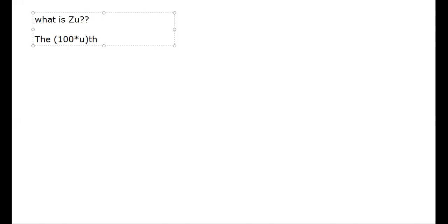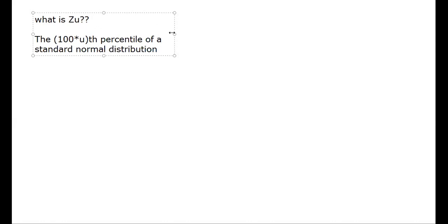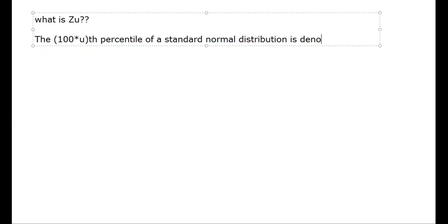What is Z_u in the case of a normal distribution? The 100·U-th percentile of the standard normal distribution is denoted by Z_u. The standard normal distribution is a distribution with a mean of 0 and variance of 1. The 100·U-th percentile of the standard normal distribution is denoted by the term Z_u.